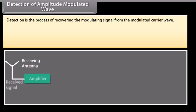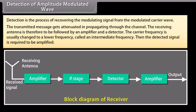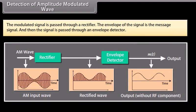Detection of amplitude modulated wave: Detection is the process of recovering the modulating signal from the modulated carrier wave. The transmitted message gets attenuated in propagating through the channel. The receiving antenna is followed by an amplifier and a detector. The carrier frequency is usually changed to a lower intermediate frequency. The detected signal is then amplified. The modulated signal is passed through a rectifier; the envelope of the signal is the message signal, and then the signal is passed through an envelope detector.